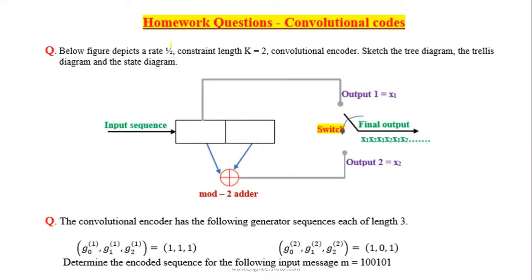In this lecture, I provide a number of homework questions from a convolutional coding course. Suppose the convolutional encoder is given — sketch the tree diagram, trellis diagram, and the state diagram.